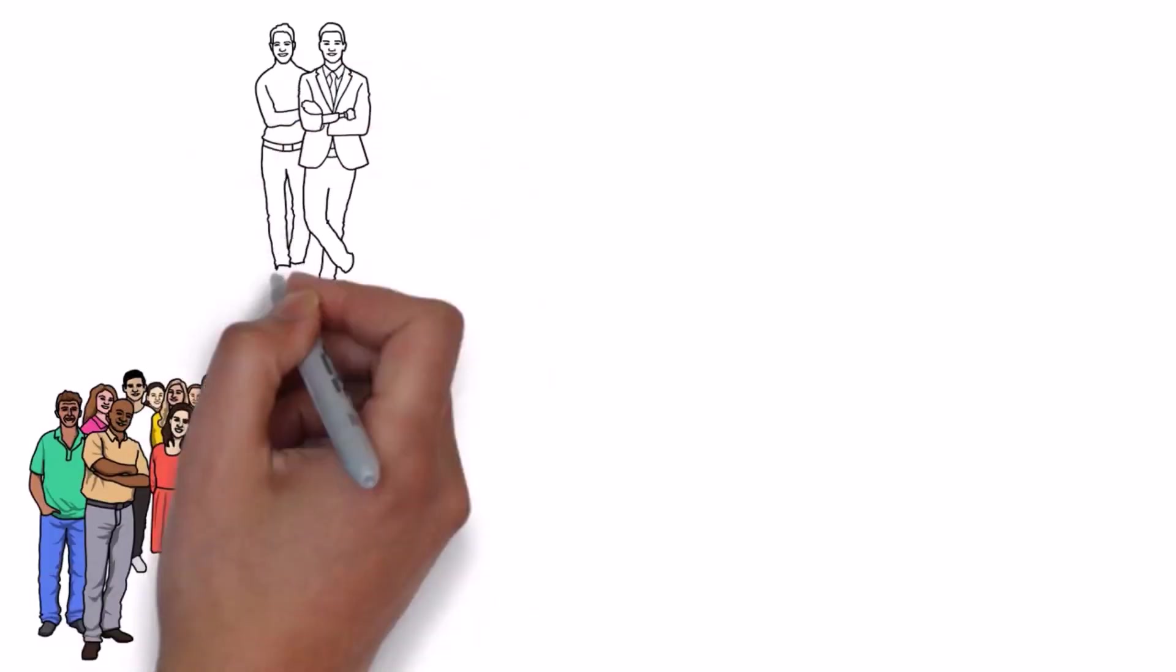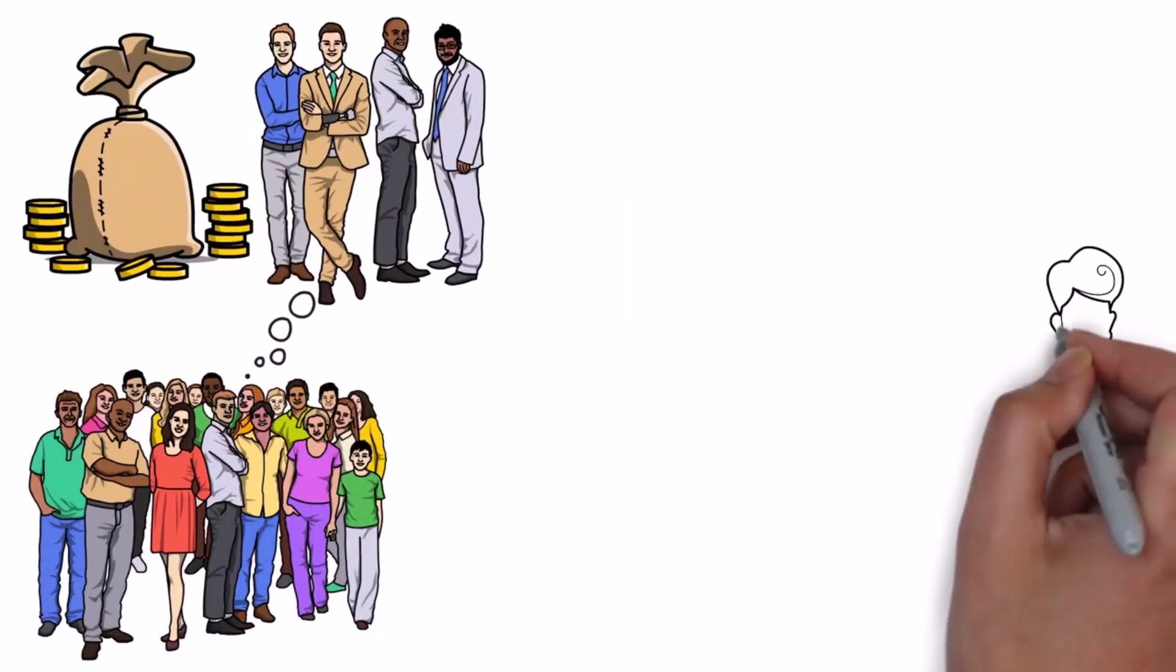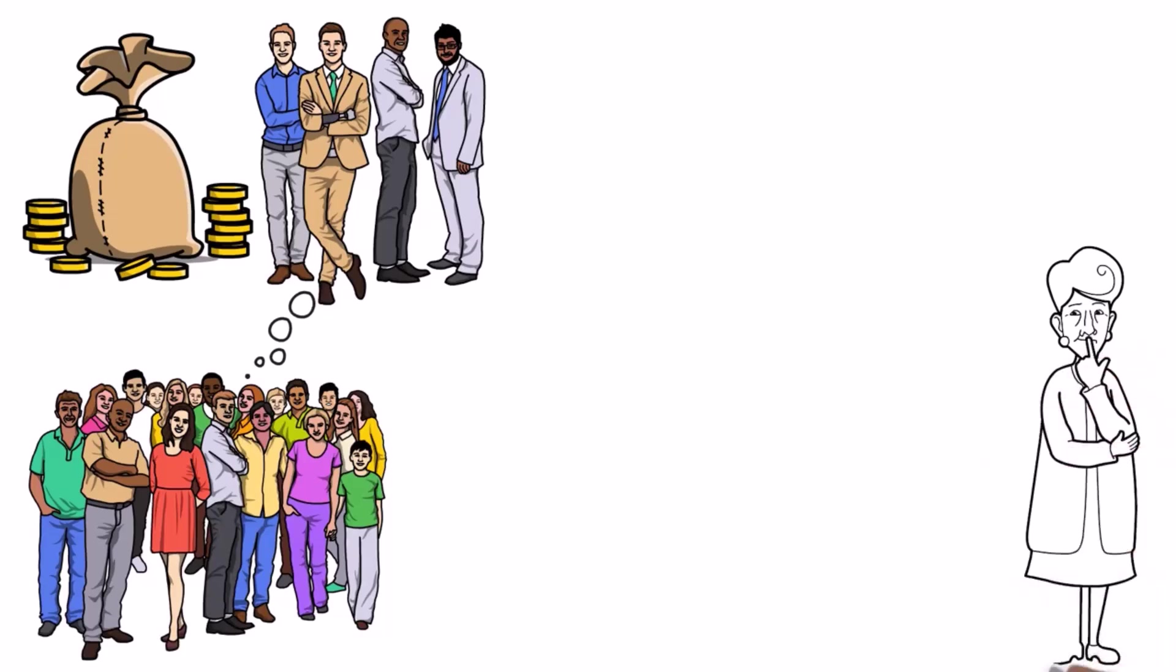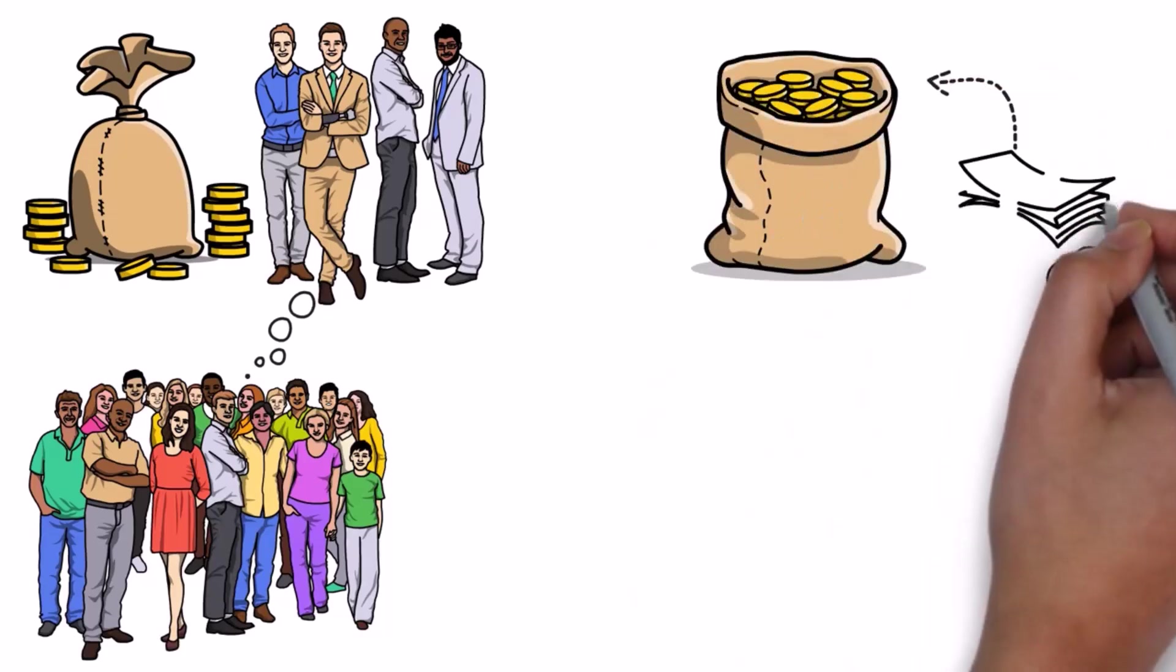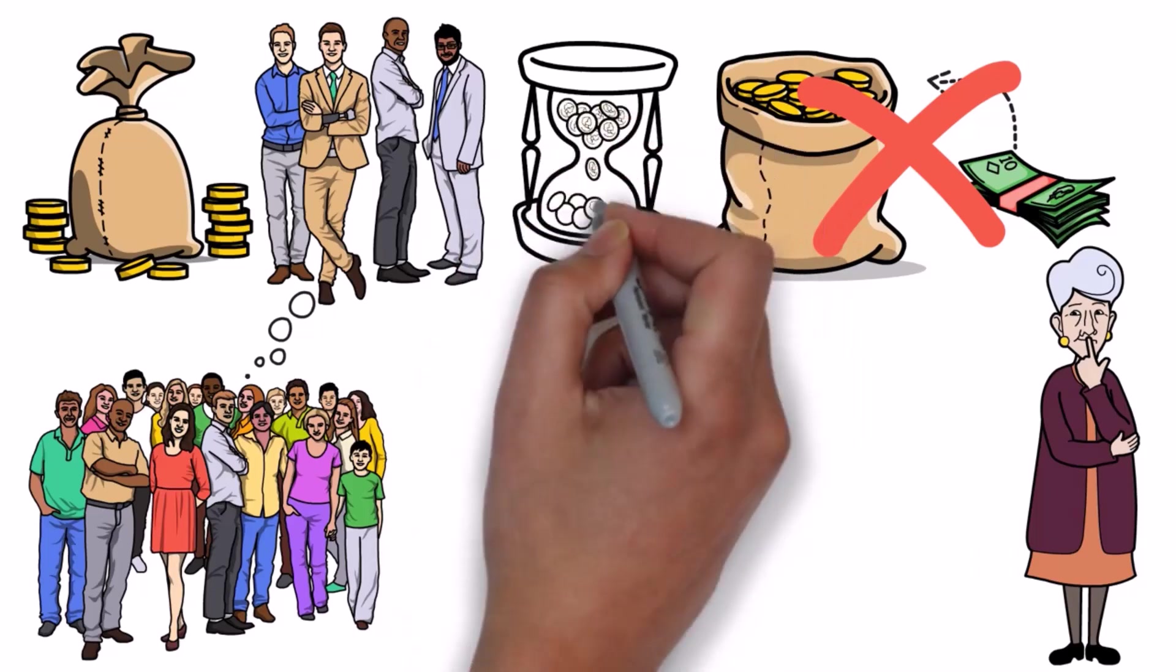74% of millennials believe millionaires inherited their money. That makes sense because saving a million dollars with a $50,000 salary is not easy. It's going to take you a lifetime.